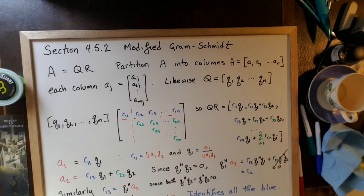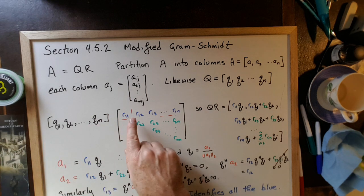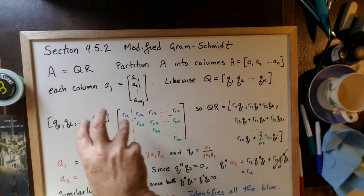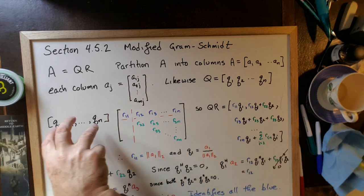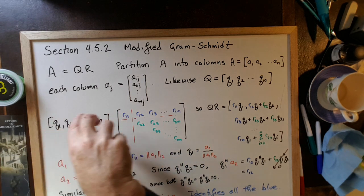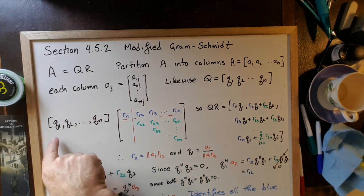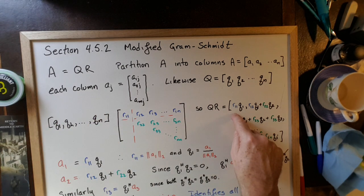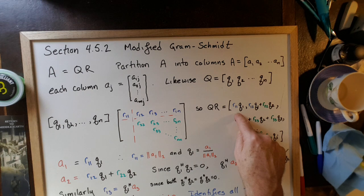So the very first column of this matrix times this matrix is going to be given by this matrix times the first column. Well, that matrix times that first column is just going to be R1,1 times Q1. So the first column of the product is R1,1 times Q1.